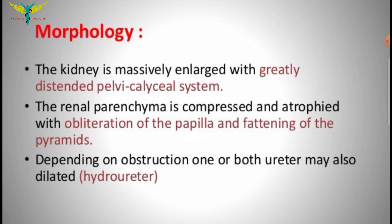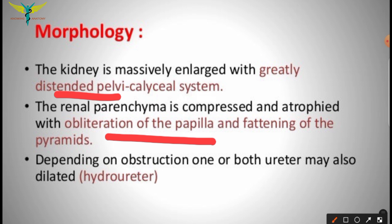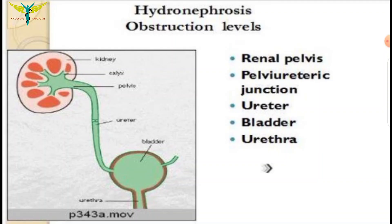Regarding morphology, the kidney is massively enlarged with a greatly distended pelvic calyceal system. The renal parenchyma is compressed first and then atrophied, with obliteration of the papillae and flattening of the renal pyramids. Depending on the type of obstruction, one or both ureters may also be dilated — dilatation of the ureter is called hydroureter.